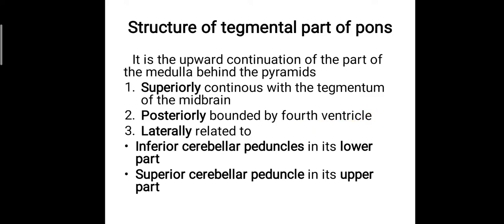There is a ventricular system in the brain which circulates the CSF in and around the brain — the two lateral ventricles, the third ventricle, and the fourth ventricle. Posteriorly, the tegmental part of the pons is bounded by the fourth ventricle. Laterally, it is related to the inferior cerebellar peduncles and the superior cerebellar peduncles in the lower part and the upper part respectively.